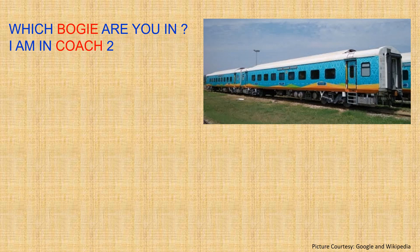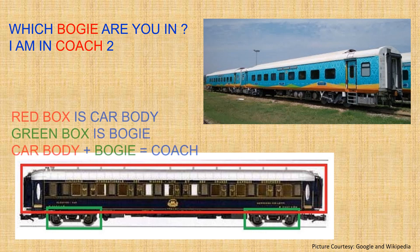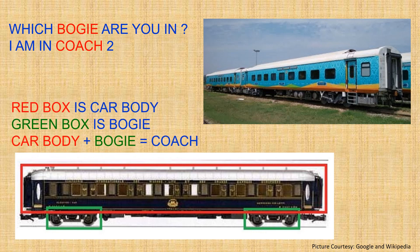We all travel in a train and are frequently asked the question: which bogie are you in? And we reply: I am in coach 2. So which is the correct terminology — coach or bogie? The components marked in green are bogies. Bogies house the wheelset and carry the load of the car, marked in red. The car body and bogie together is called a coach. So next time you can correctly answer: I am in coach 2.